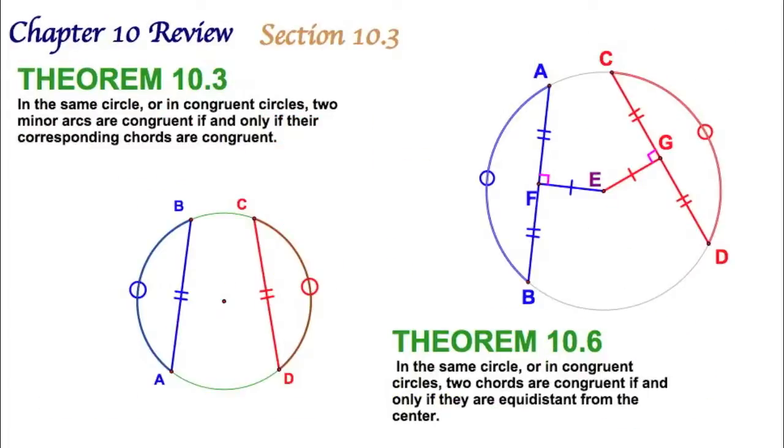Let's move on to section 10.3. In this section we have four theorems. I'm going to group 10.3 and 10.6 together here - they look pretty similar. Here I've got two congruent arcs corresponding to two congruent chords and vice versa. Pretty straightforward there. And on 10.6, I've got the same thing, but I'm adding to it. I know these two chords are congruent because they're equidistant from the center of the circle. That is, these two segments are the same. Interesting.